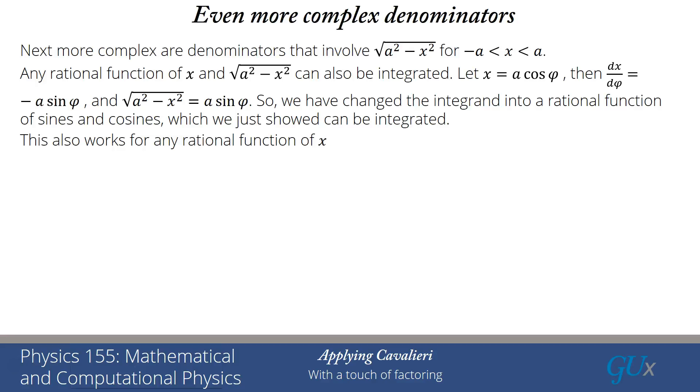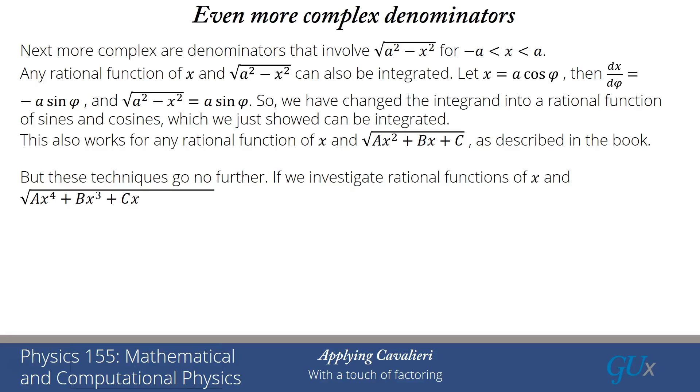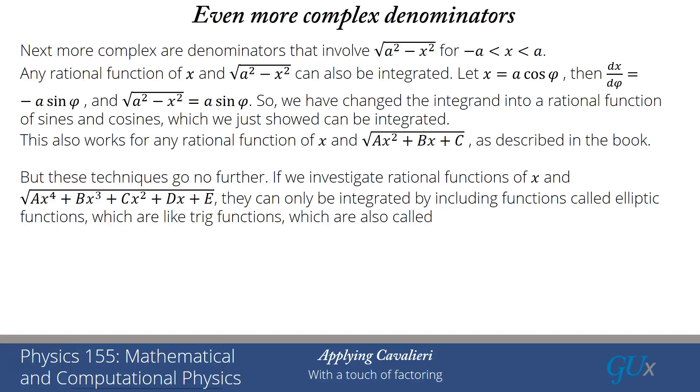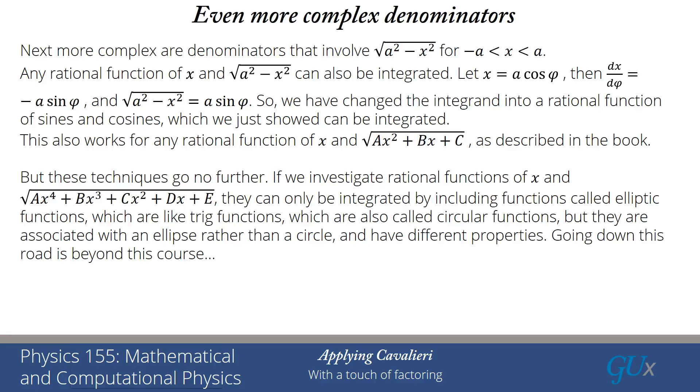Now it turns out this also works for any rational function of x and the more complicated quadratic, ax² + bx + c, and the details for that are described in the book. And it turns out that's as far as you can go. If you try to look at the next most complicated rational functions with the square root of a quartic, ax⁴ + bx³ + cx² + dx + e, those can only be integrated in general by including functions that are called elliptic functions. The elliptic functions are very similar to trig functions. Trig functions are sometimes called circular functions, but unlike the trig functions which are defined relative to a circle, the elliptic functions are defined relative to an ellipse, and that's why they're called elliptical functions. They have different properties, but they're very similar. Going down this road is going way beyond what we're going to do in this class.